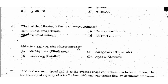Next question. Which of the following is the most correct estimate? Options: plinth area estimate, cube rate estimate, detailed estimate, abstract estimate. The right answer is option C: Detailed Estimate. Detailed estimate is the most correct estimate.